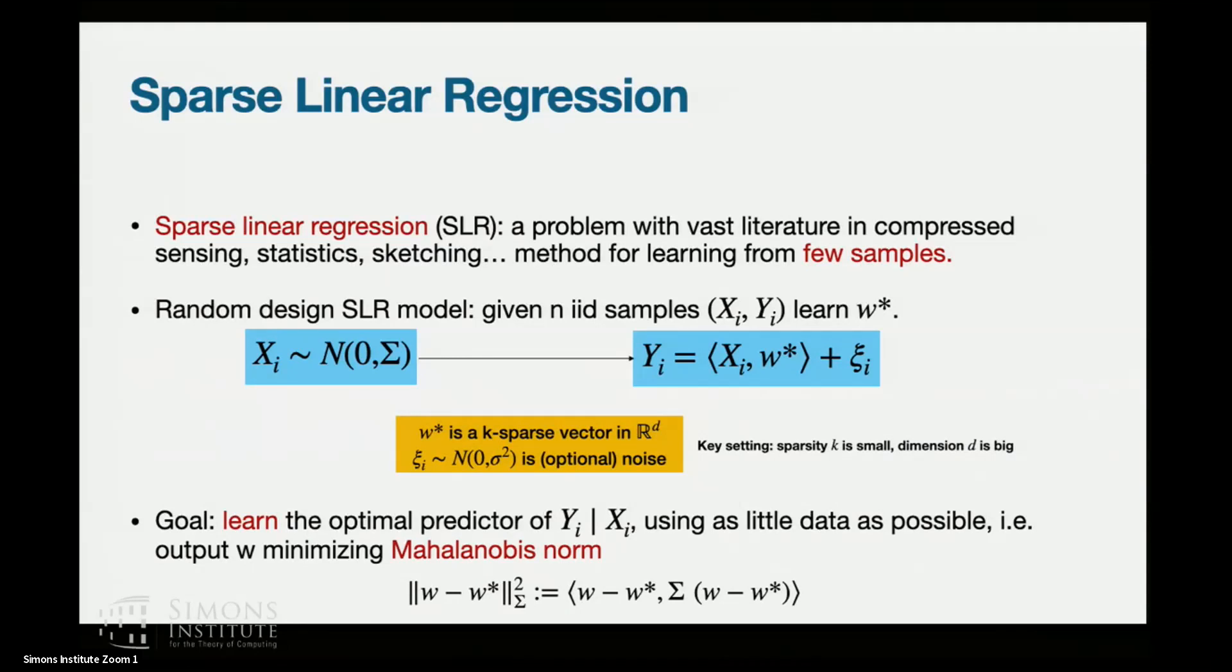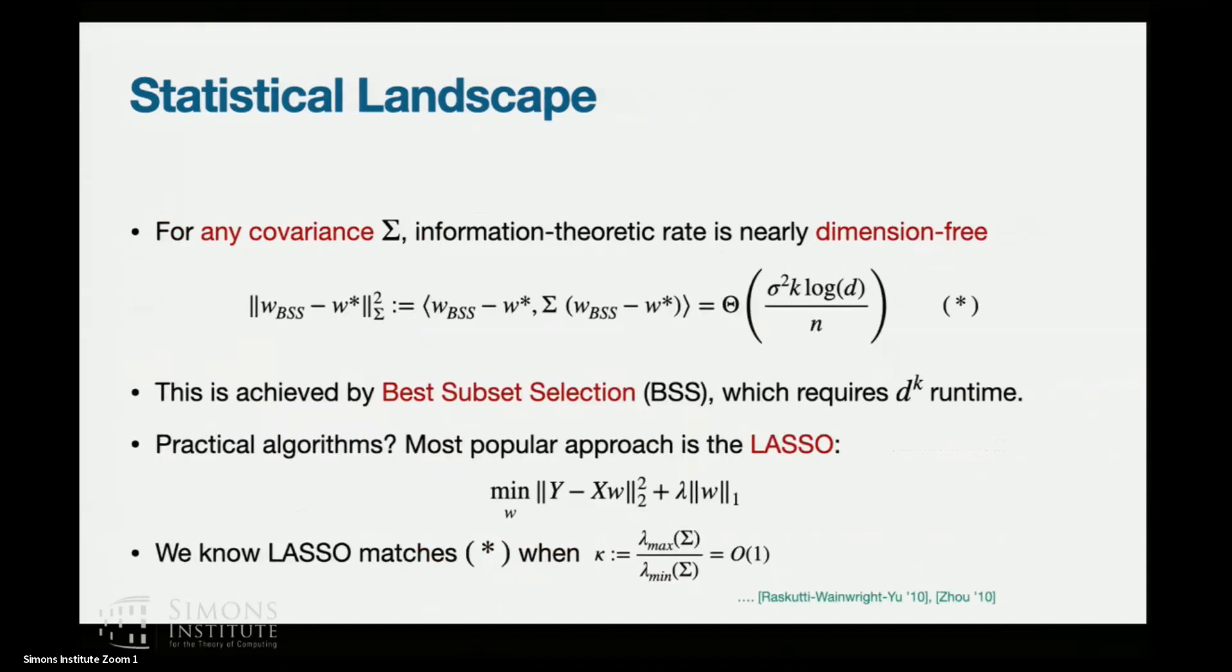So the goal is to learn how to predict Y from X for a fresh sample X. That's the usual goal in learning, and it turns out to be equivalent to minimizing this thing called the Mahalanobis norm, and it's just defined at the bottom. It's like the L2 norm, but you put a sigma in through it.